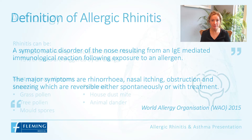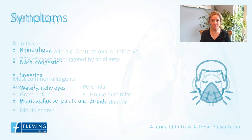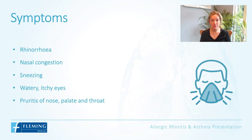Rhinitis can be divided into allergic, non-allergic, occupational or infective, but the majority — 75% of cases — are triggered by an allergy. These allergens can be subdivided into perennial and seasonal. Perennial includes house dust mite and animal dander, whereas seasonal includes grass, tree and weed pollen and mold spores.